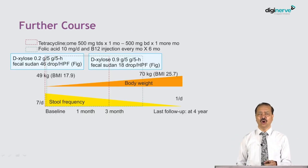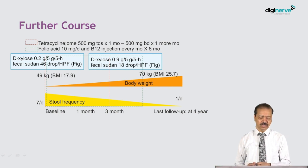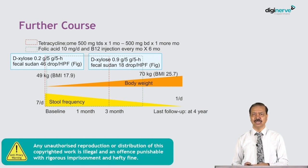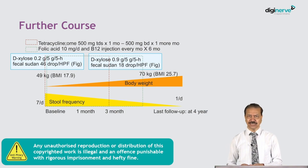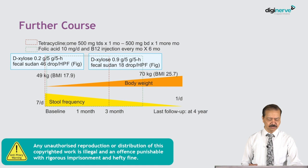Our patient had malabsorption of two unrelated elements, as well as malabsorption of calcium, potassium, and so on. He had partial villus atrophy. All other causes of malabsorption such as celiac disease, hypogammaglobulinemia, and giardia were absent, so we suspected tropical sprue.